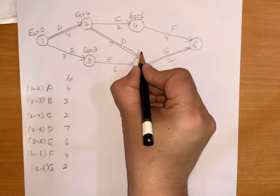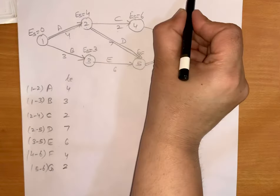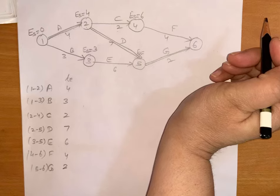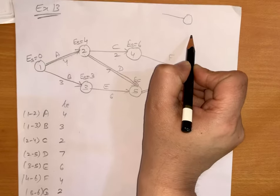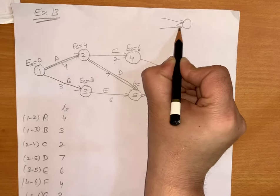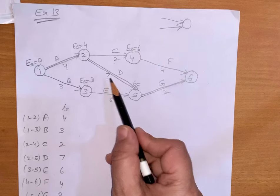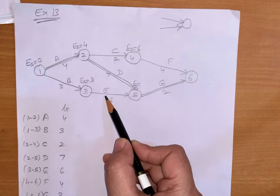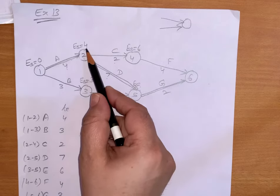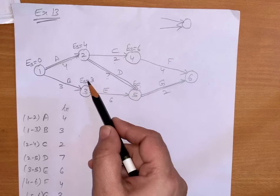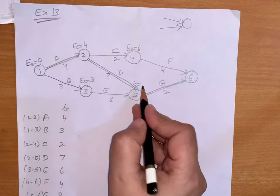Now for the fifth event's earliest start time, you can see this is an event where two activities are merging. So how to find out earliest start? If I go by one path it will be 4 plus 7 equals 11. If I take into consideration activity E it will be 3 plus 6 equals 9. There are two activities: 4 plus 7 gives 11, and 3 plus 6 gives 9. So we are to take the longest one — we will take 11.